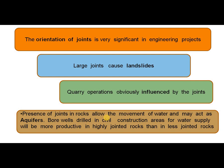How joints are oriented — vertically, horizontally, or inclined — determines how engineering projects are to be designed. Quarry operations are significantly influenced by the joints. The presence of joints in rocks allows the movement of water and they may act as aquifers, so that more wells can be drilled in civilian construction areas for water supply. In highly jointed rocks, we may tap good groundwater; in less jointed rocks, we may tap groundwater in lesser quantity.